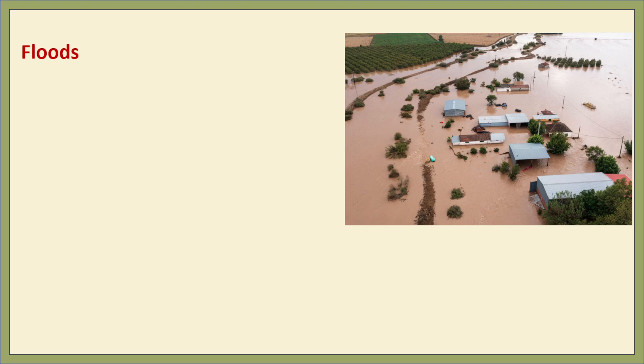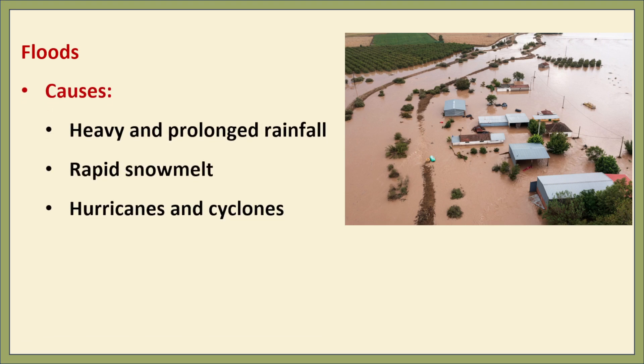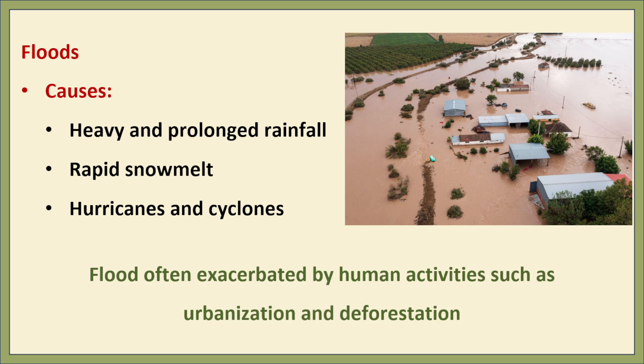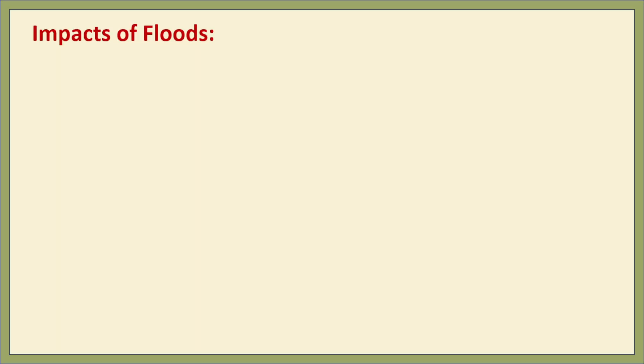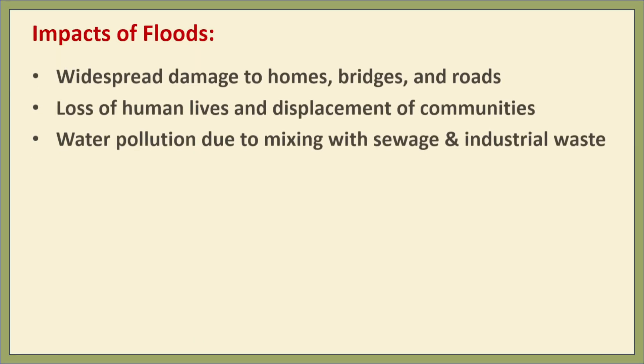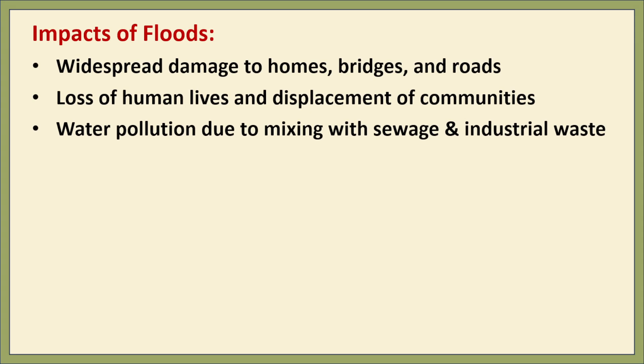Let us talk about floods. Flooding is a natural process caused by heavy rainfall, melting snow and hurricanes. But human activities like deforestation and urbanization make floods more frequent and severe. The impacts include damage to infrastructure like homes, bridges and roads, loss of human life, displacement of communities, and contamination of water sources due to mixing with sewage and industrial waste.